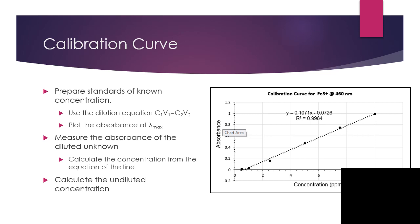We can use that equation in order to figure out what the concentration is, and that will be of our diluted unknown. Now, to calculate the undiluted concentration, we're again going to have to use our dilution equation to figure out what the concentration is before we added the water.